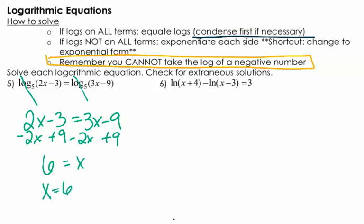So x is 6. The one thing you want to do is just check if I plugged 6 back into either one of the logs, would I end up with a negative number? So 12 minus 3 is positive and 18 minus 9 is positive. So x equals 6 is good.